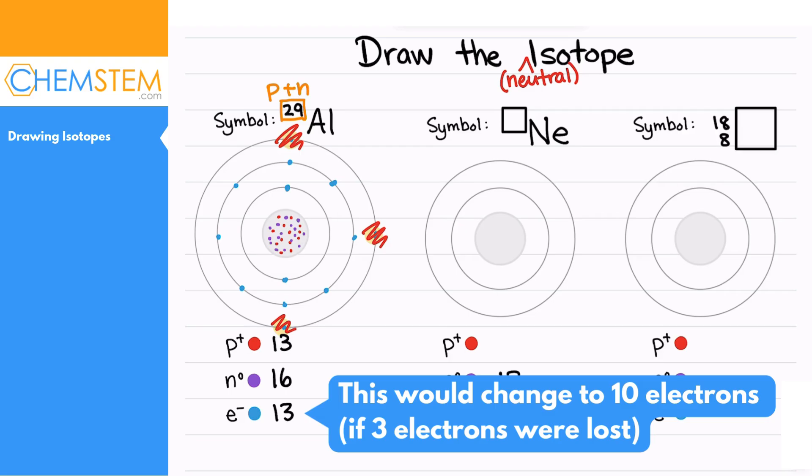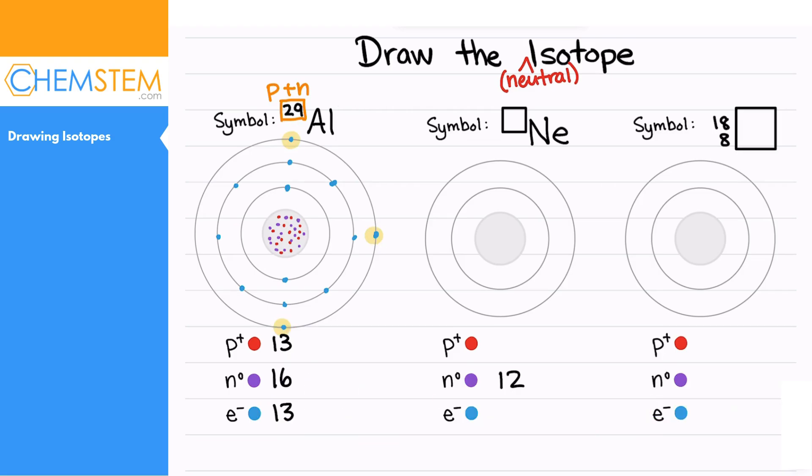If these were removed, then the loss of three electrons is going to give this a positive three charge, which would make this an aluminum ion as well as an isotope. But that's just a really strong preview for what you might encounter. Sometimes people do combine the idea of ions and isotopes, but now we're back to having a neutral aluminum atom.